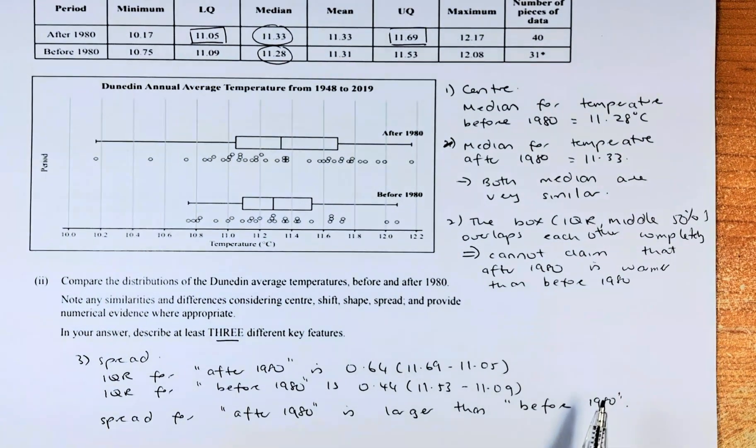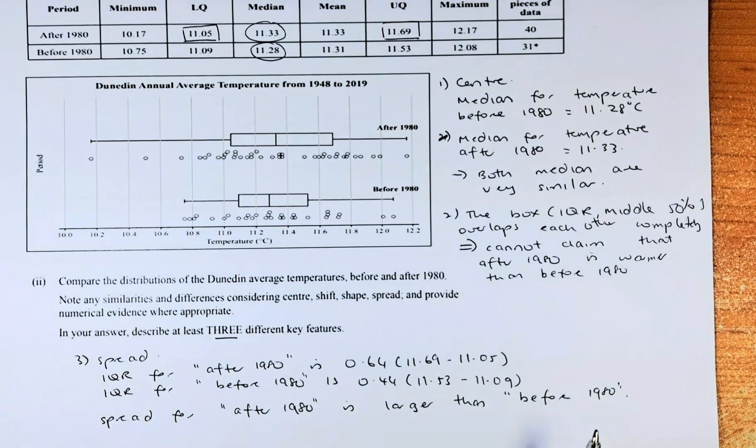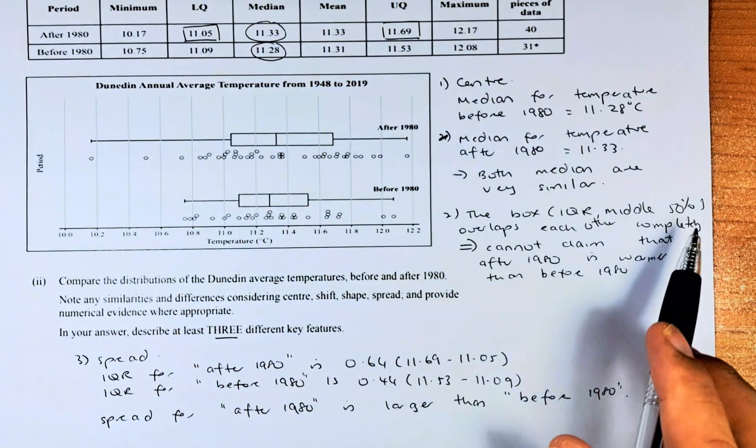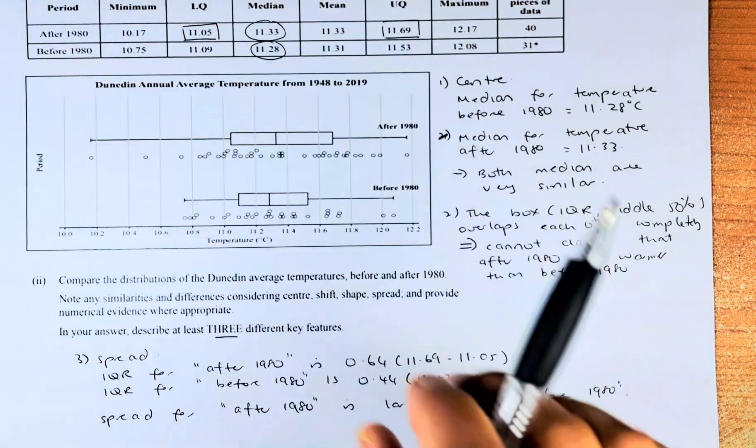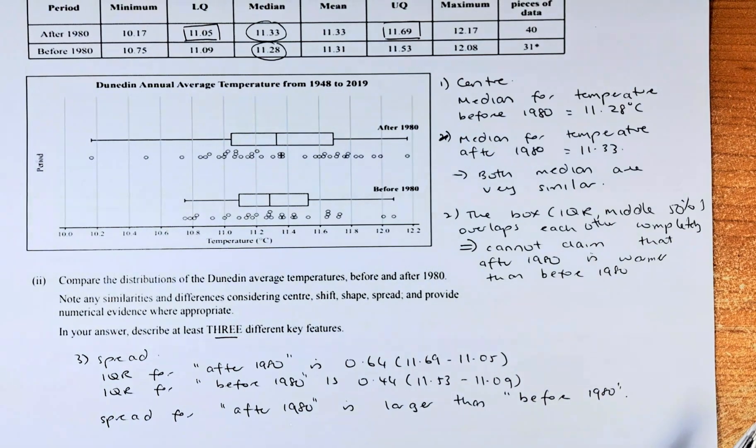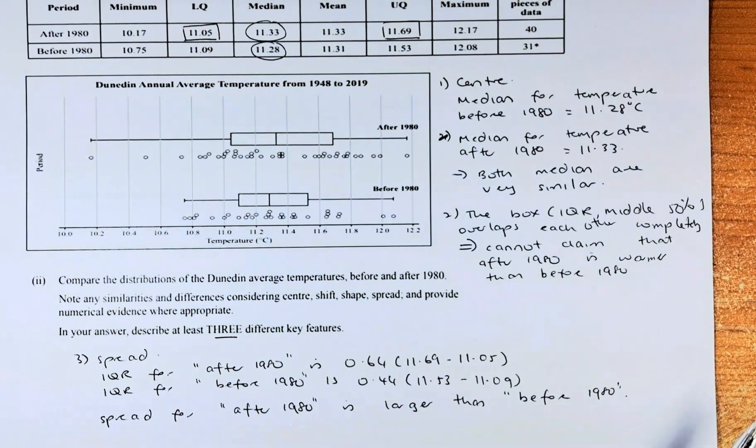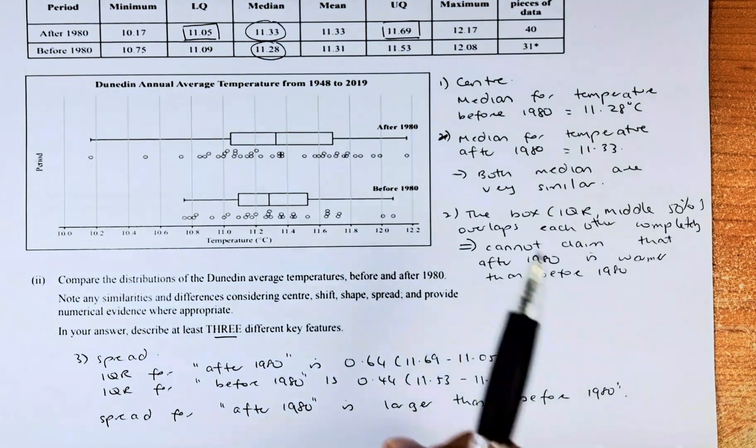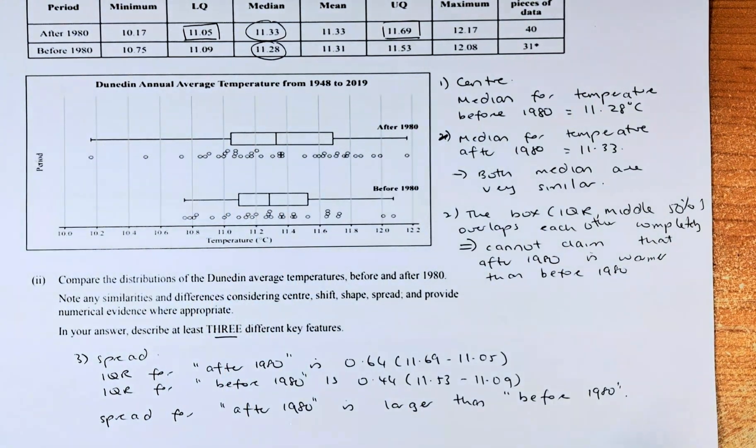Part 2, we're going to look at the box here, also called the interquartile range or the middle 50%. They overlap. When you bring it up, it overlaps each other. So you cannot claim that before 1980 is bigger than 1980 or after 1980 is bigger than 1980. So when they overlap each other, there is no difference in their temperature.